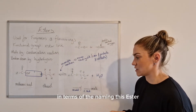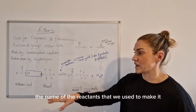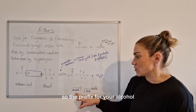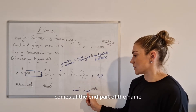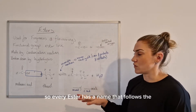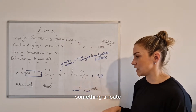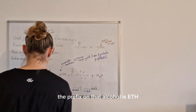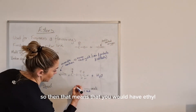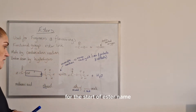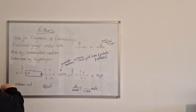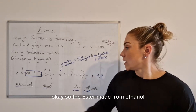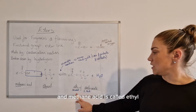The name of the ester comes from the name of the reactants used to make it — you're really just looking at what the prefixes were. The prefix from your alcohol comes at the start of the name and the prefix from your carboxylic acid comes at the end. So every ester name follows the pattern: something-yl something-anoate. For example, if you've used ethanol, the prefix is eth, giving you ethyl. If your carboxylic acid prefix was meth, the end of the name would be methanoate. So the ester made from ethanol and methanoic acid is called ethyl methanoate.